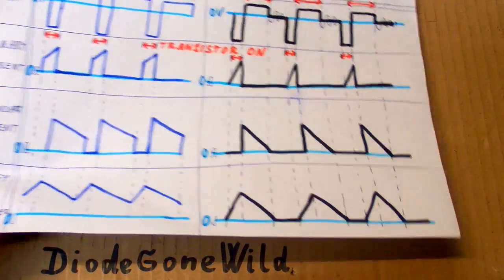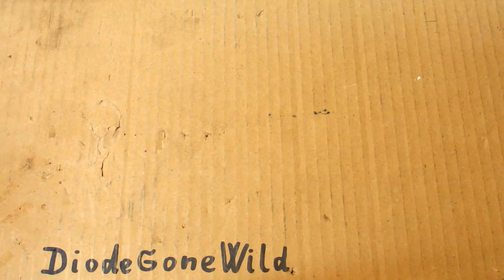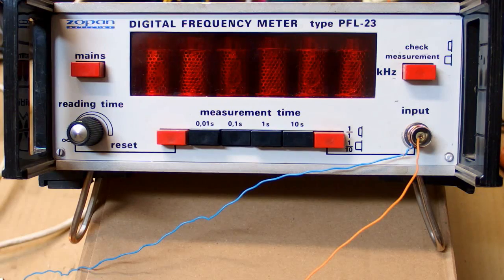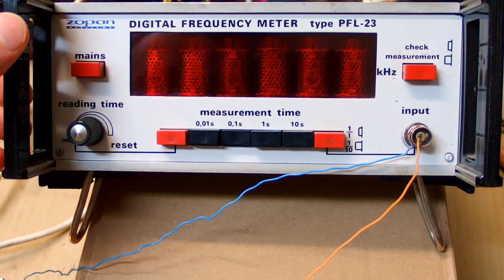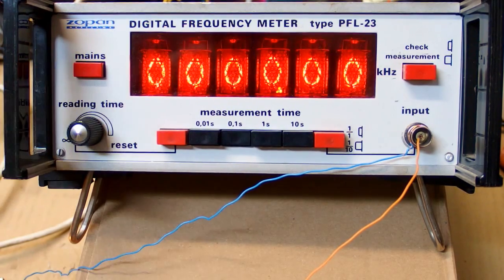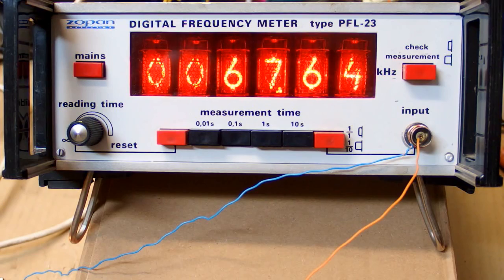So this is Diode Gone Wild and see you in part number three. Let's check the frequency once more using my Nixie frequency counter. It's about 67 kilohertz.